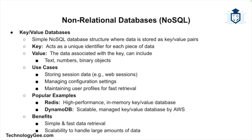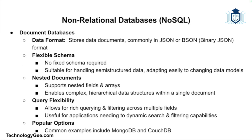A key-value database is the simplest type of NoSQL database, where data is stored as a collection of key-value pairs. A key is a unique identifier for the data, and the value is the data associated with that key, which can be any type of information such as text, numbers, or binary objects. Key-value databases are often used for storing session data, configuration settings, or user profiles. Popular key-value databases include Redis and DynamoDB.